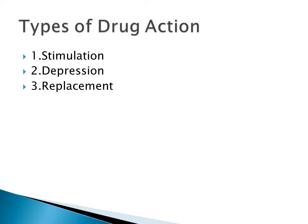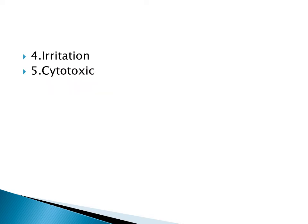In replacement therapy, it refers to the use of natural metabolites or hormones. A very important example is insulin used for the treatment of diabetes mellitus. Irritation shows often noxious effects and is particularly applied to less specialized cells such as epithelium or connective tissue. A simple example is that bitterness increases liver and gastric secretions.